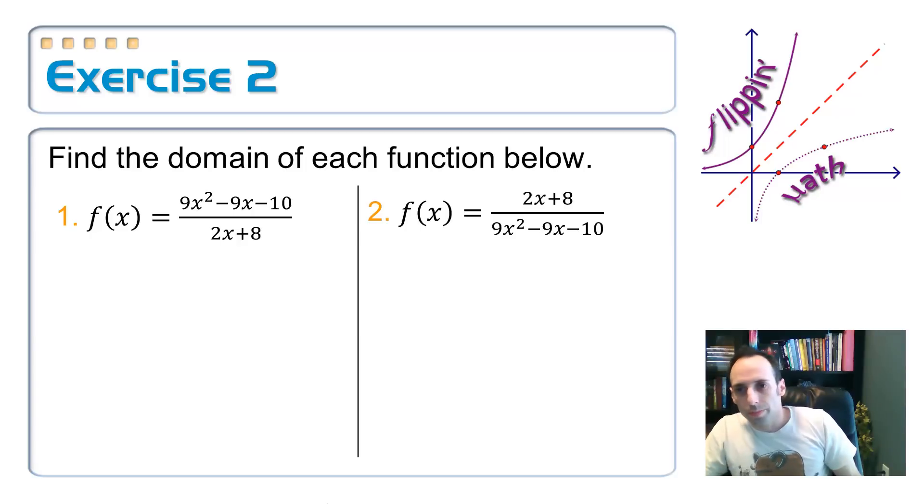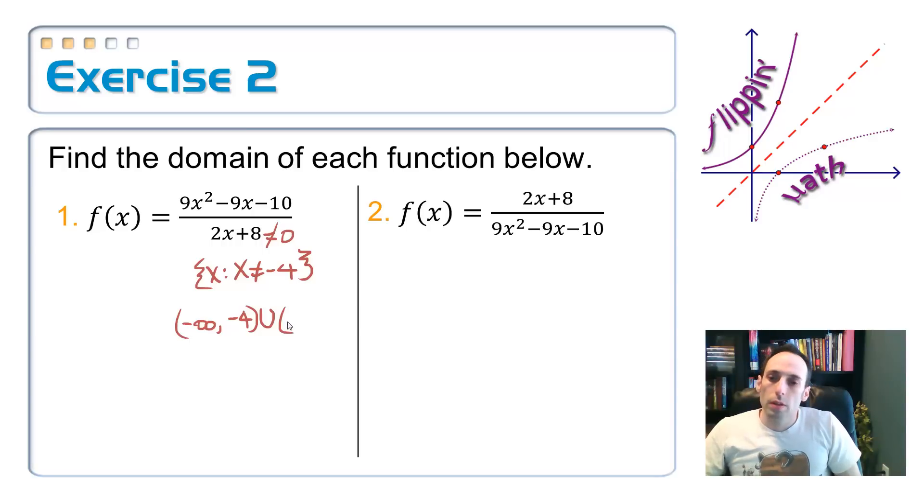So let's try this on a couple of examples here. Find the domain of each of these functions. I don't even have to worry about the top. Top doesn't even matter. For the domain, I just have to make sure the bottom is not equal to zero. This, not equal to zero. So what number would make that equal to zero? I would subtract the eight over, divide it by two. So x is not equal to negative four. Here it is in set builder notation and in interval notation. It's everything except for negative four. So from negative infinity to negative four, parentheses around these, union, negative four again, all the way up to positive infinity. It's a piece of cake. Very, very easy.